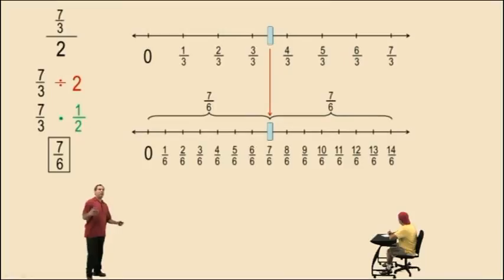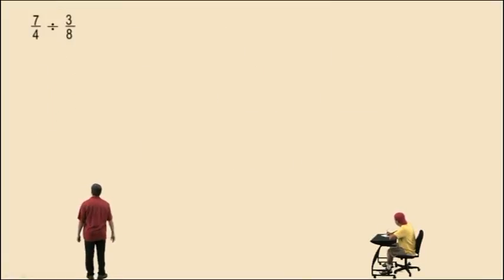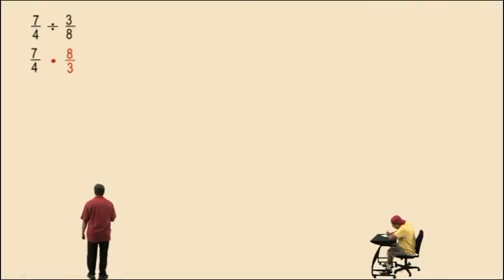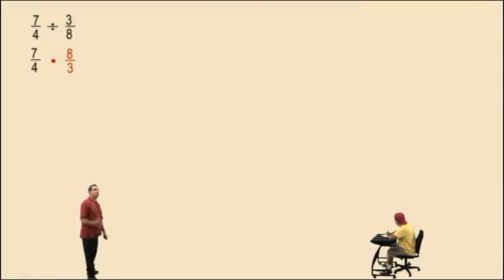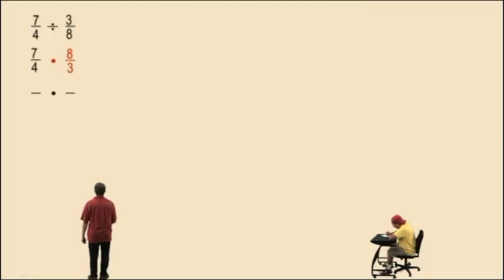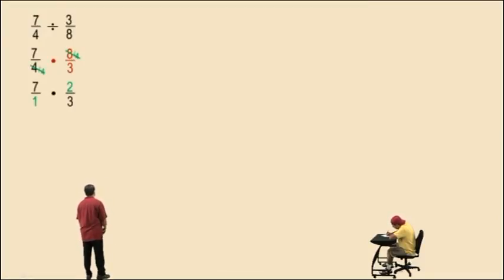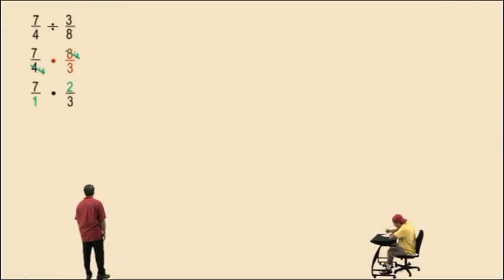So let's forget about the number lines and let's do some problems. Seven-fourths divided by three-eighths. Notice, we do not change the seven-fourths — that remains the same — but it becomes times eight-thirds. Now we look for common factors to see if we can cross-cancel. Eight and four have a common factor of four, so those become two over one. Let's bring down our work and multiply straight across the top and straight across the bottom, and we get fourteen-thirds for our answer.